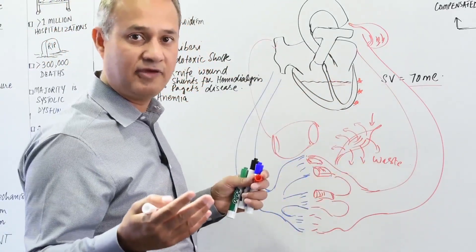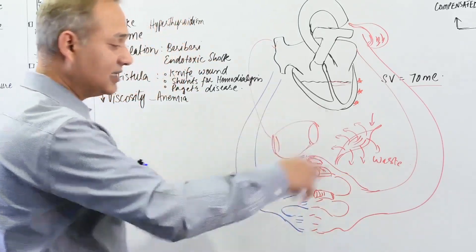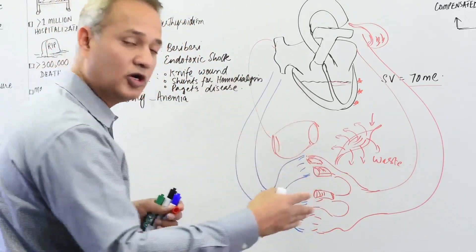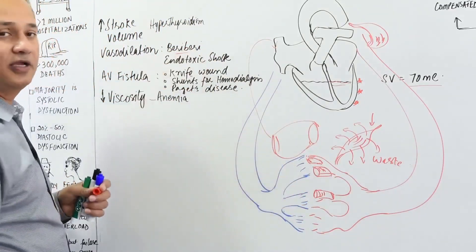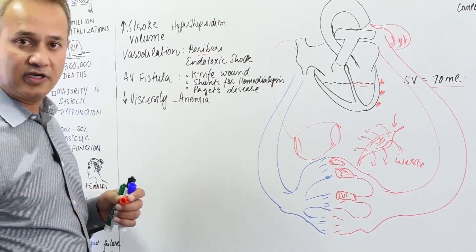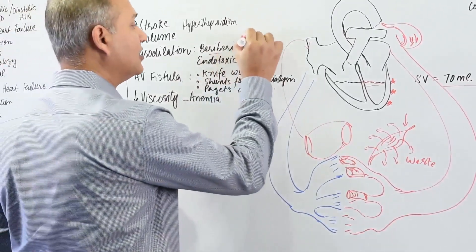And we will have high output failure if this cycle does not stop, if you do not intervene in time. When would that happen? Beriberi, wet beriberi more clearly. Why? What happens?